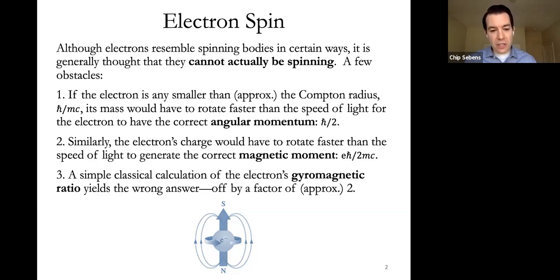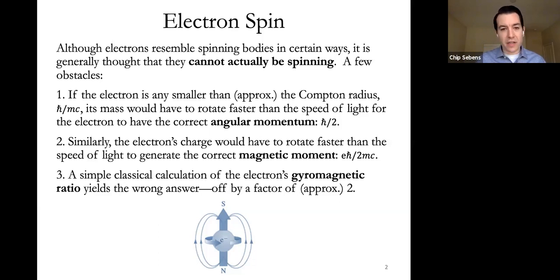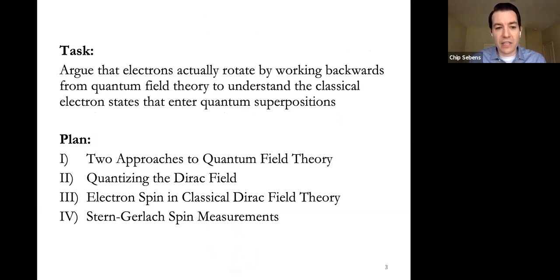For all these reasons we don't think of the electron as actually spinning, and in the best physics describing the electron we don't represent it as actually spinning. What I want to argue today is that electrons really do rotate, and that if you look at our best physics correctly—if you interpret the equations correctly—you'll see that they already describe the electron as spinning.